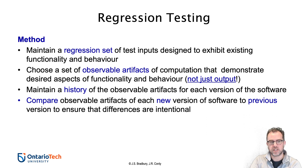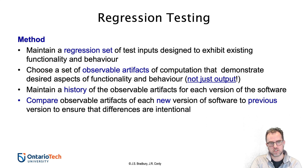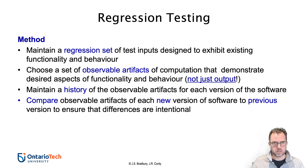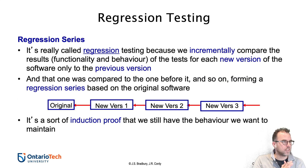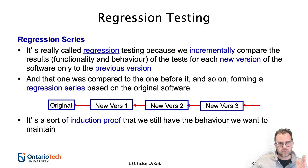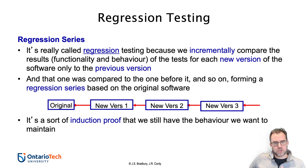We want to build up a history or record of these observable artifacts for every version of the software that we create and release. As we do a new version, we generate the observable artifacts and compare them with the previous version to ensure the differences are intentional. Each new version is compared to the previous one. This is very similar to induction proofs from discrete math. This process of going from the originally deployed software to the new version, comparing each new version with the previous, is called a regression series.